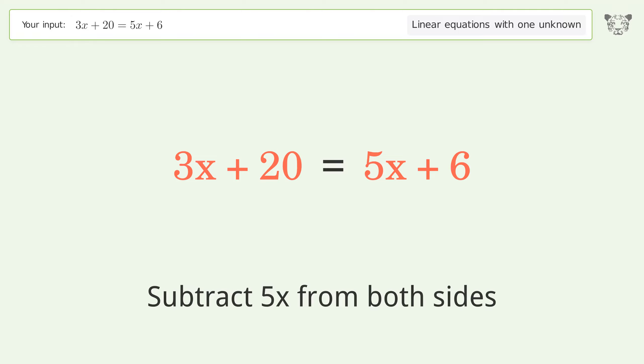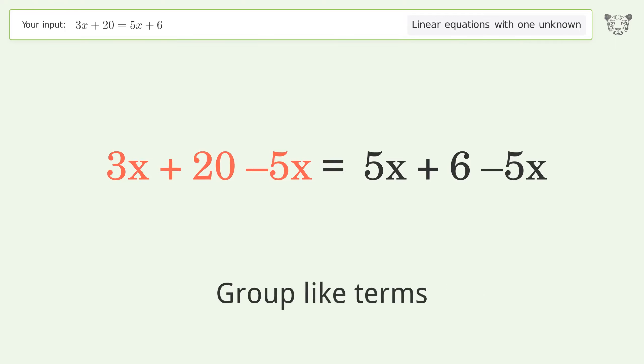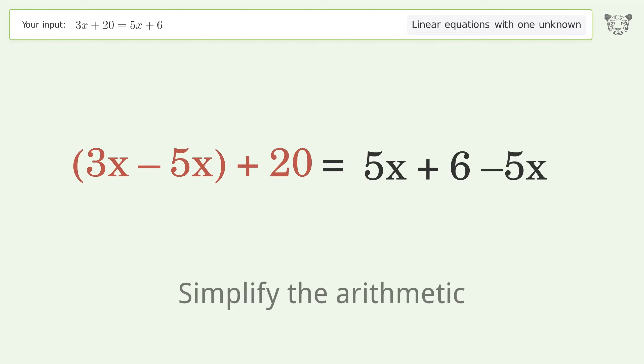Subtract 5x from both sides. Group like terms. Simplify the arithmetic.